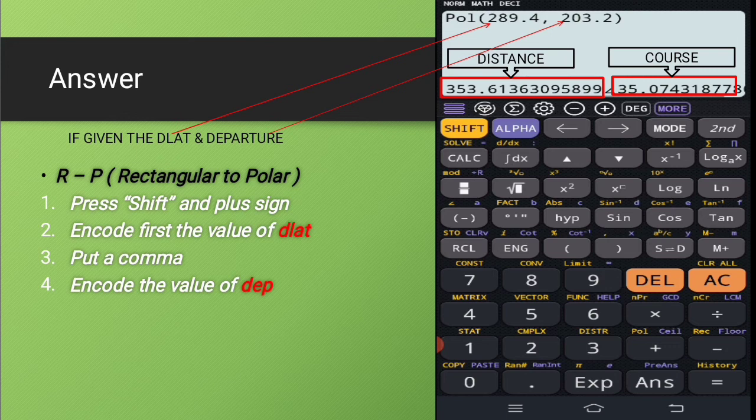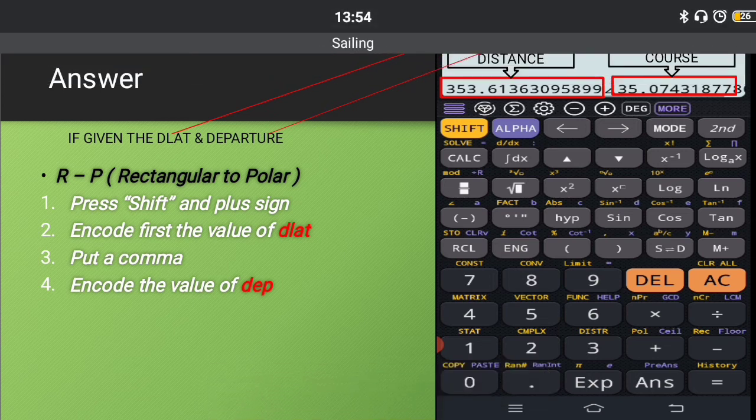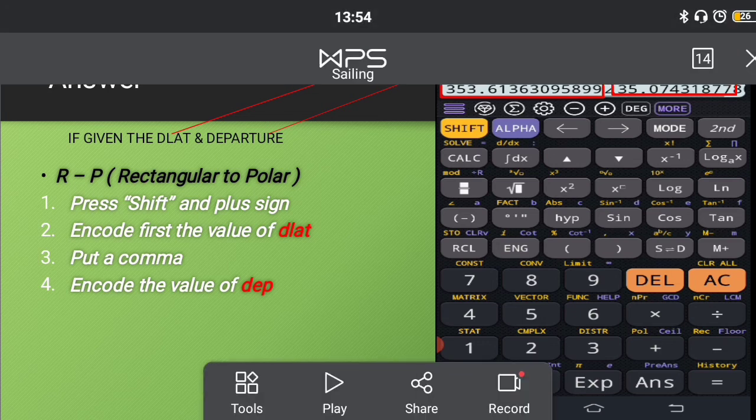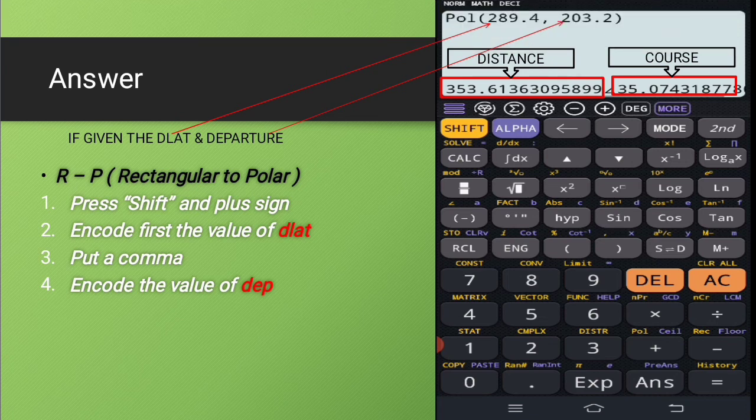you have there the value for the distance and for the course. So for the answer, we have 353.613 nautical miles for the distance. And for the course, now this is only the course angle, 35.07 degrees.